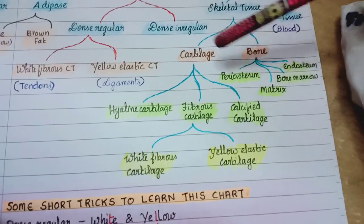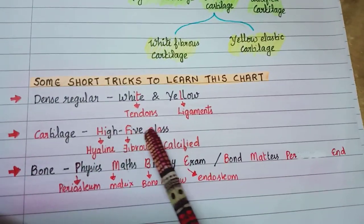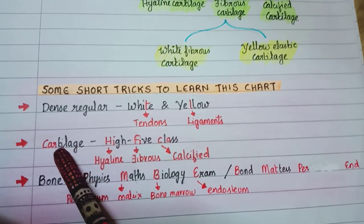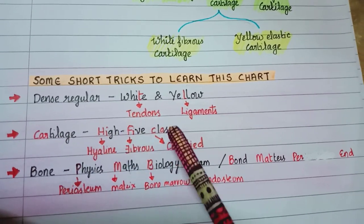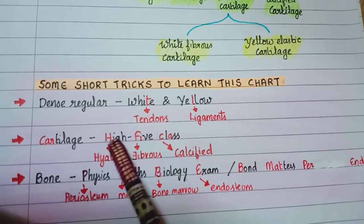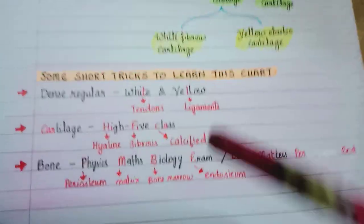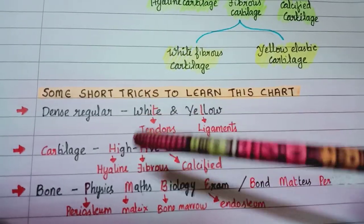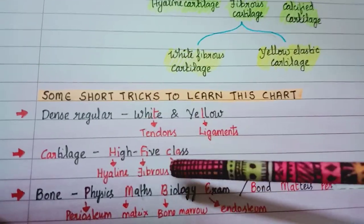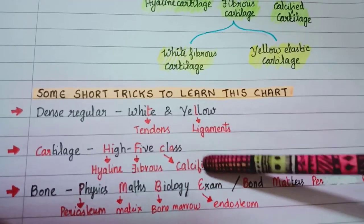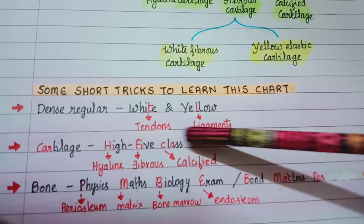An easy trick to learn the types of cartilage is: car - cartilage - high phi class. Those who have a car are high phi class! High is for hyaline, phi is for fibrous, and class is for calcified. Class and calcified are somewhat similar.